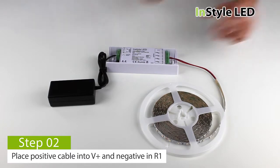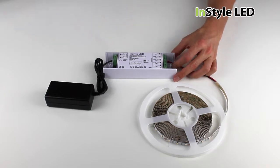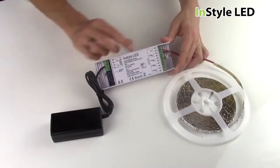Next, wire the positive cable from the LED tape to the V plus on the multi receiver. Then wire the negative cable to the channel 1 or also marked R.